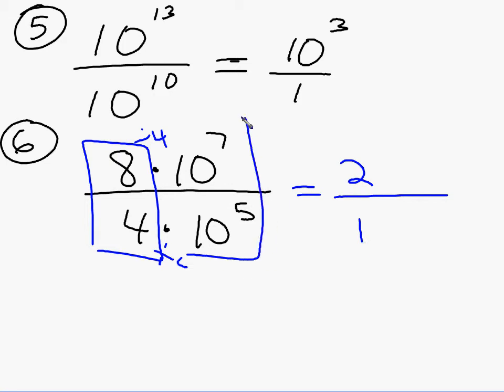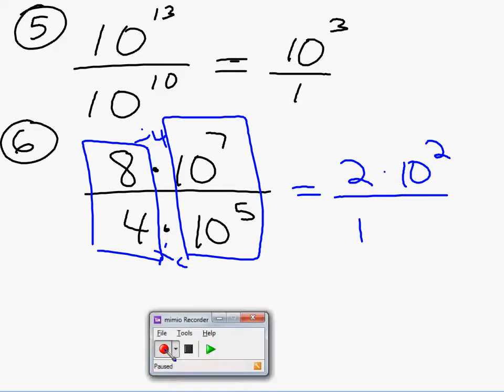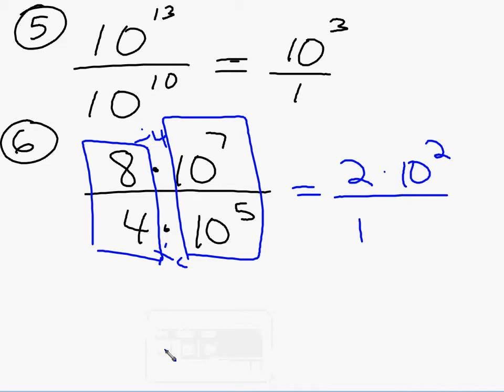Now, how can I simplify this 10 to the 7th over 10 to the 5th? Subtract 7 minus 5, which is 2. My 10 to the 2nd is left on top, like that. On that answer, couldn't I simplify that a little bit? I know what 10 to the 2nd power is, isn't that 100? So what's 2 times 100? I could write this answer as 200.